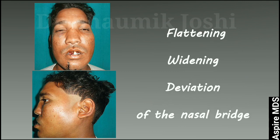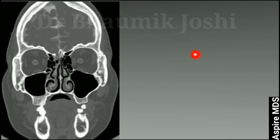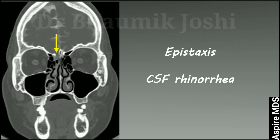On examining the nose, there will be flattening, widening, or deviation of the nasal bridge. As seen on the CT scan, fracture of the ethmoid bone leads to epistaxis — bleeding through the nose — as well as CSF rhinorrhea, because fracture of the cribriform plate of the ethmoid leads to leakage of CSF from the cranial fossa into the nose.